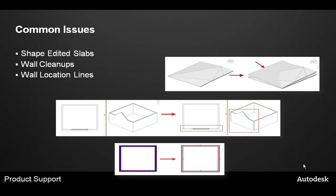One critical issue for engineers is that walls will always be copy monitored by their centerlines. Engineers may want to copy monitor only the structural portion of the architect's wall, so in the copy monitor dialog they may set the new wall type to represent only the core structure. Unfortunately, the copied walls will not line up with the core of the architect's walls, as they will be copy monitored by their centerlines.